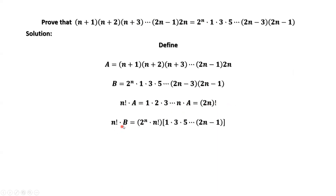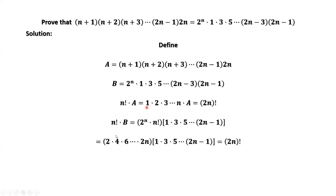n factorial times b equals n factorial times 2 to the power of n times the product of n consecutive odd numbers. We need 2 as a factor for each term — we need n factors of 2, so here we have 2 to the power of n.